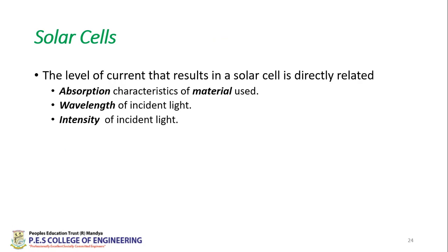To sum up, the level of current in a solar cell is directly related to the absorption characteristics of the material used, the wavelength of incident light, and the intensity of light. These are the three main parameters on which the generated current depends.